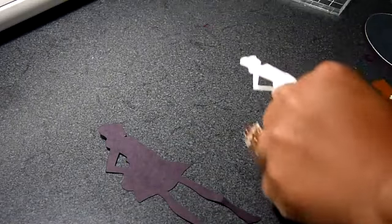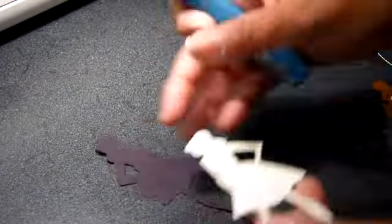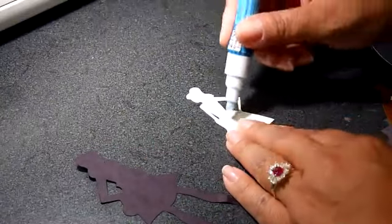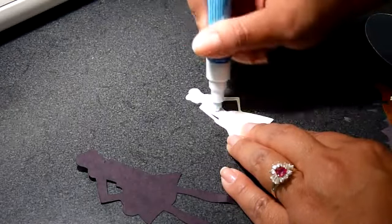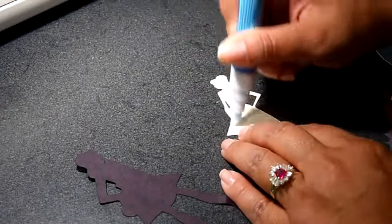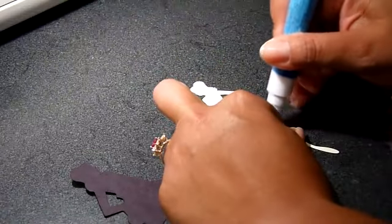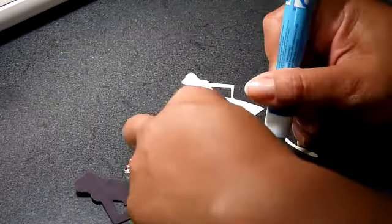So I'm going to go ahead and start assembling the girl. Like I said, I cut her at four and a half, and then the other thing that I did is I used the flip option on my Cricut because I wanted her to face the other way. So that's why you see it flipped. It doesn't look like the one in the cartridge.